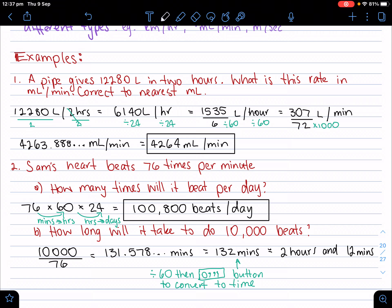So we then see that it's going to be 6,140 liters per hour. Now we can see that if that's how many it is per hour, then we divide it by 60 to figure out how many liters per minute. We divide both sides by 60, and we get 307 over 72 liters per minute.